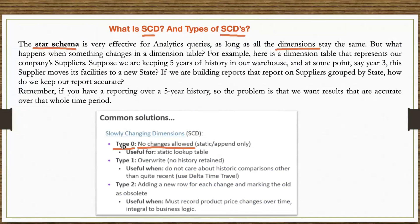Type 1 — if a table already has some data and you are getting changed data, how are you going to manage it? The question is: are you going to manage history or no history? No history means you will update the data on the existing table — that is overwriting history. Whenever any change data comes from source, you just update. If not available, insert; if available, update. That is called Type 1.